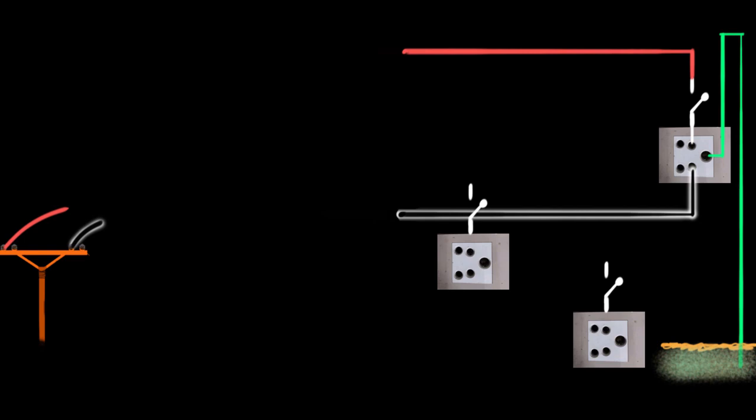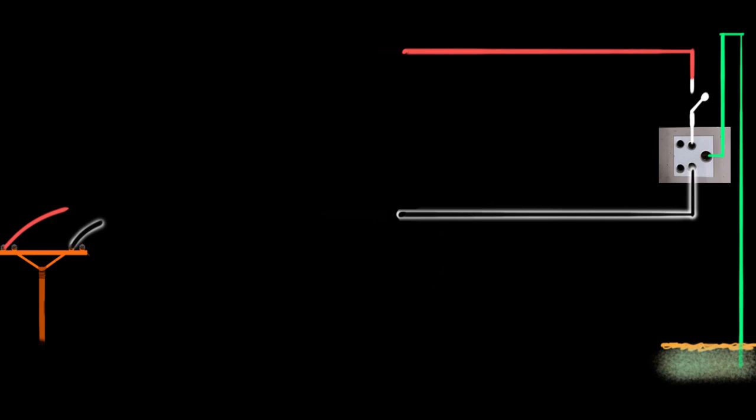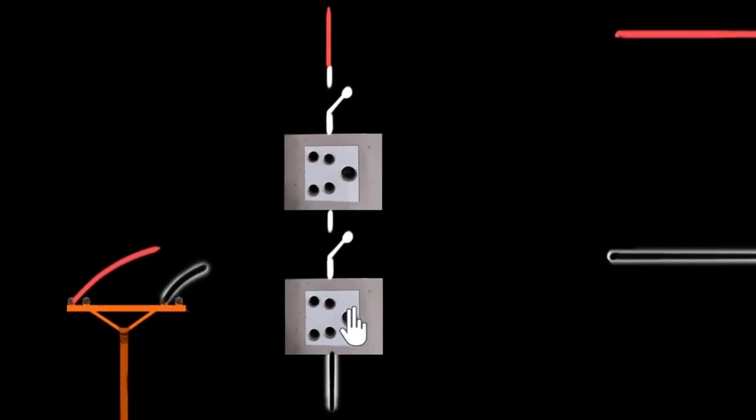All right. If you have given it some thought, let's see. Let's start by exploring the series connection. Now, one immediate problem you can see over here when two plugs are connected in series is that if you were to close one of this switch, let's say I put my mobile to charge over here and I close one of that switch, no current will flow over here. Why? Because this switch is open. If you want the current to flow in this wire, then both the switches need to be closed. That means you need to switch on both these plug points in order for the current to flow. So either both will run or none of them will run.